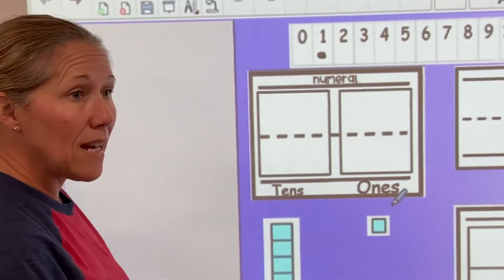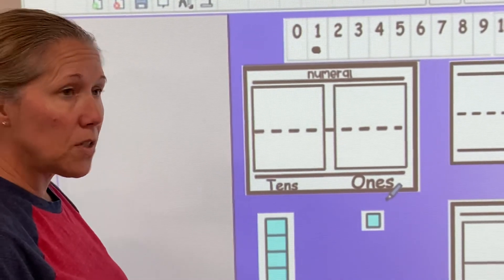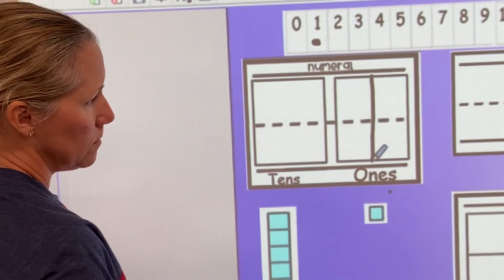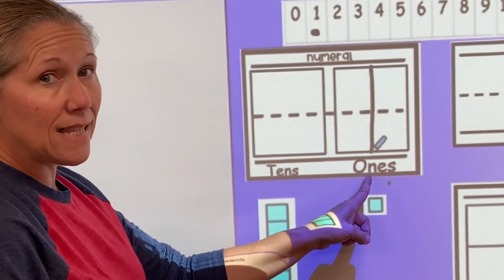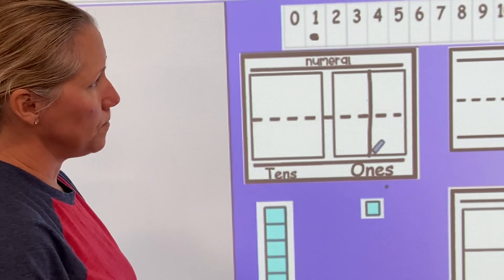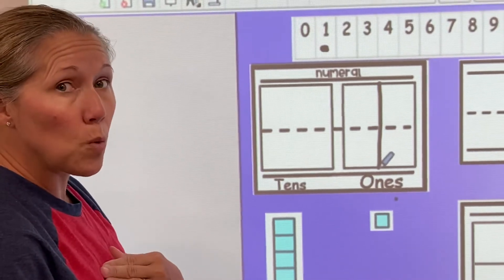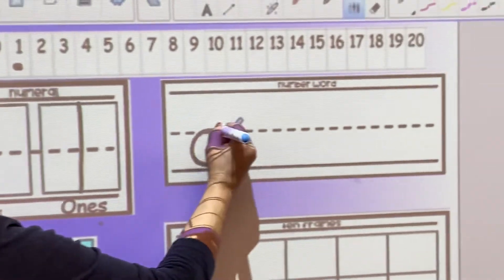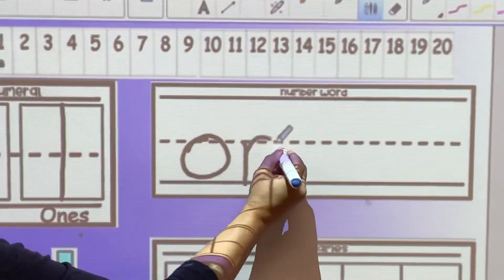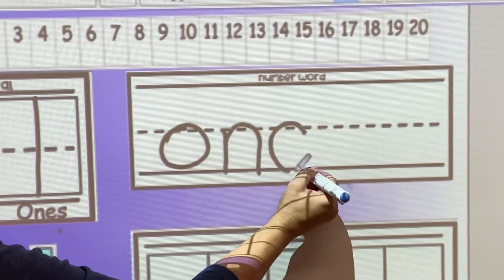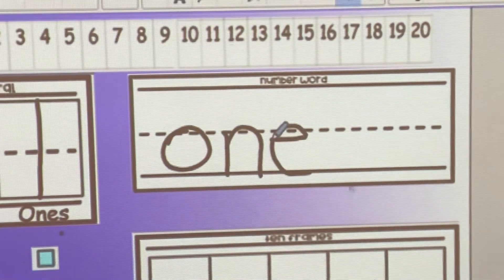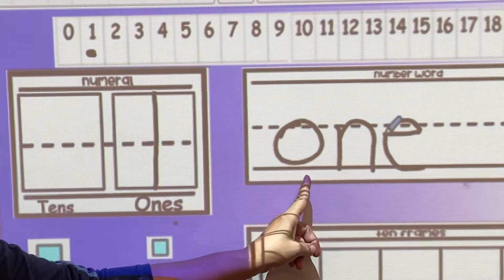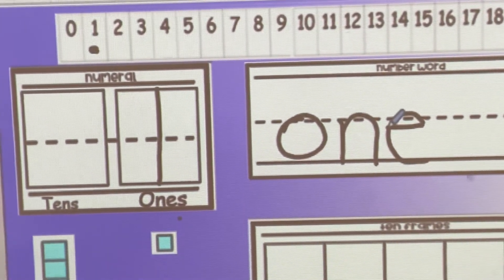So now when I write my numbers, I always start at the top and I come down. That friends is the number one. Now I'm going to write the word one. O N E. This is the number one. This is the word one.